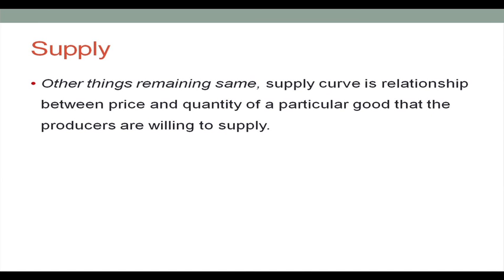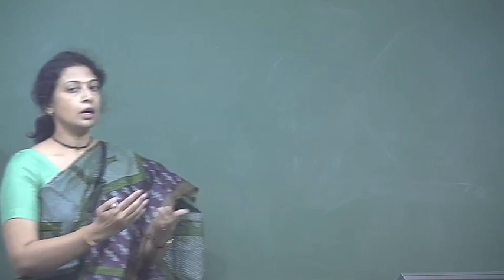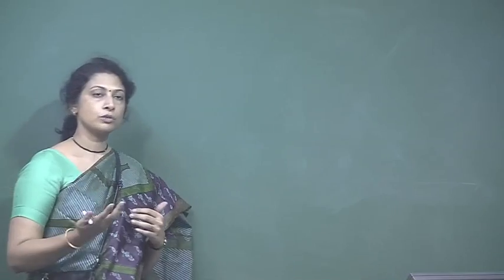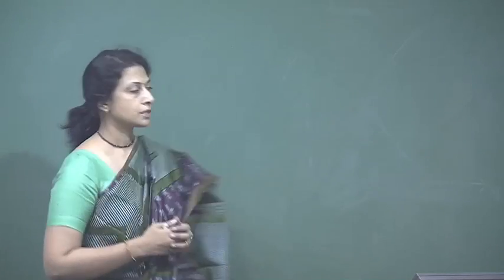Supply is, other things remaining the same, the relationship between price and quantity of a particular good that the producers are willing to supply. When a producer decides how much to supply, it is not just dependent on the price of the good — it depends on a lot of factors.